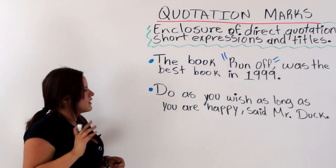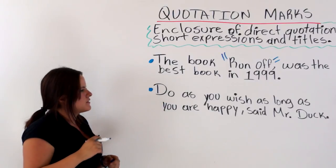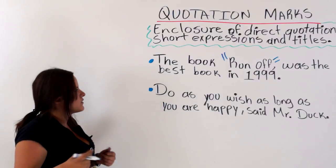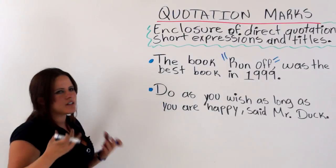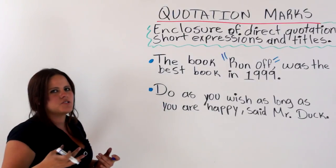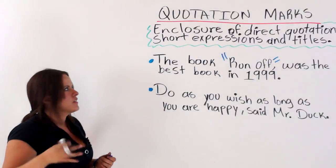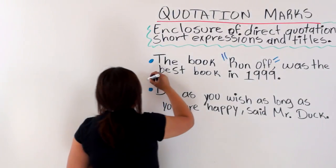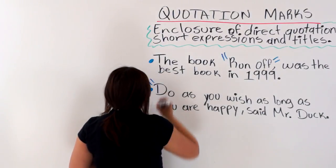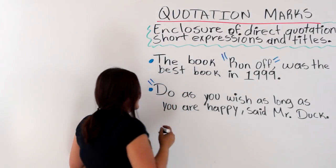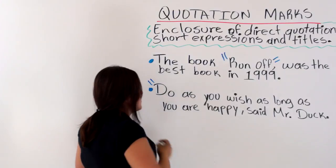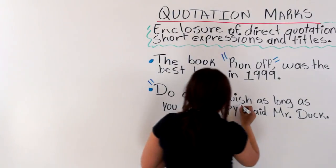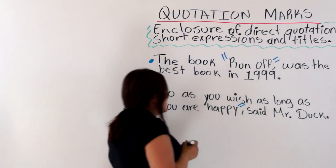The next one: 'Do as you wish as long as you're happy,' said Mr. Duck. So what should we enclose in quotations? The direct quotation. What did Mr. Duck say? 'Do as you wish as long as you're happy.' There you go.